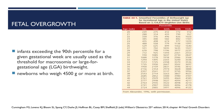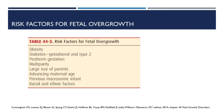Next is fetal overgrowth. These are infants that exceed the 90th percentile for a given gestational week, used as a threshold for macrosomia or large for gestational age birth weight. Usually these are newborns who weigh 4,500 grams or more at birth. Risk factors for fetal overgrowth include obesity, diabetes, post-term gestation, multiparity, large size of parents, advancing maternal age, previous macrosomic infant, and racial and ethnic factors.